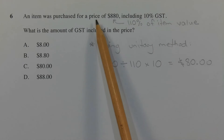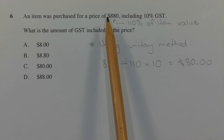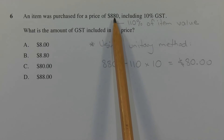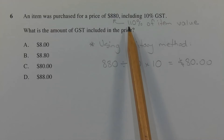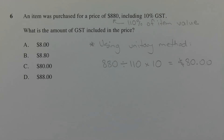Since this price includes 10% GST, $880 represents 110% of the item's value. That's 100% — the item's value — plus 10% GST, which gives us the 110%.